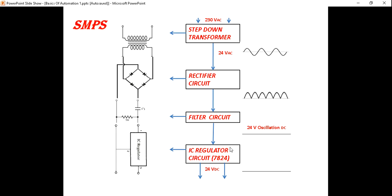We control the power supply — 24V DC. For this program, we control the power supply AC area. Step-down transformer — that is the operation. Then convert AC voltage: 24 AC to 24 DC. You can use a rectifier circuit, DC voltage, and a capacitor. You can use 24V DC power supply, and you can use the SMPS device.